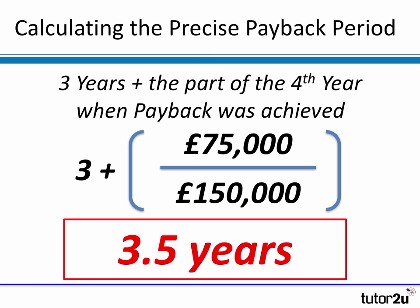If you do that, you'll see that payback arises after three and a half years. That's how you calculate the extra portion of the year in which payback occurred. Three and a half years to get our half a million pound investment back.